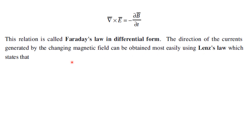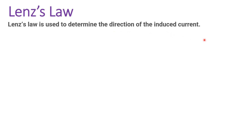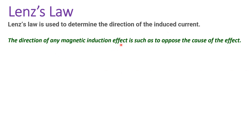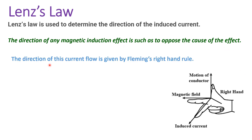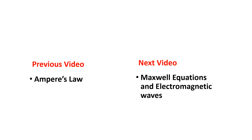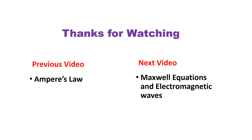The direction of the induced current is determined by Lenz's law: the direction of any magnetic induction effect is such as to oppose the cause of the effect. The direction of current flow is given by Fleming's right-hand rule: the thumb indicates the motion of the conductor, one finger indicates the magnetic field, and the middle finger shows the direction of the induced current. Our previous video covered Ampere's law, and the next will cover Maxwell's equations and the theory of electromagnetic waves. Thanks for watching — if you are new to this channel, please subscribe and share.